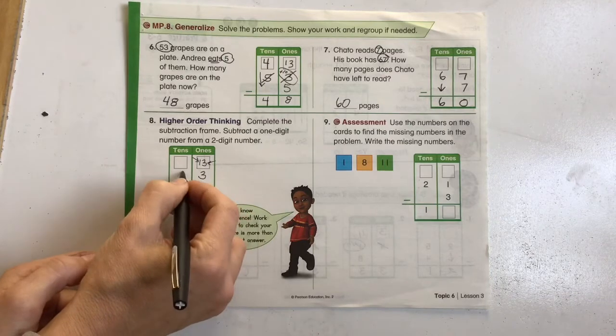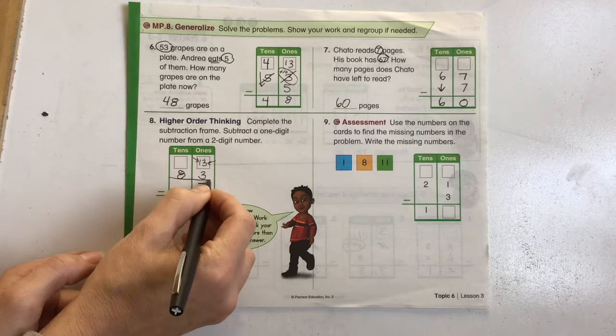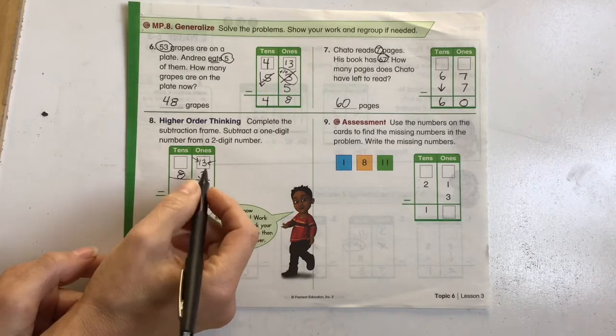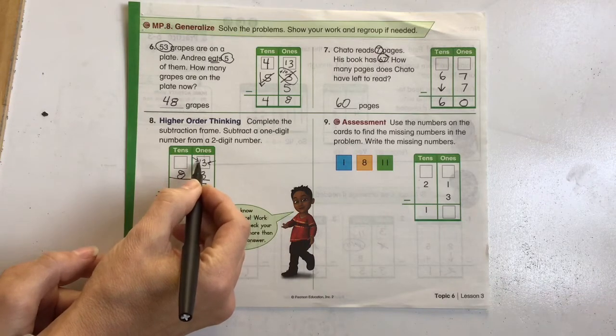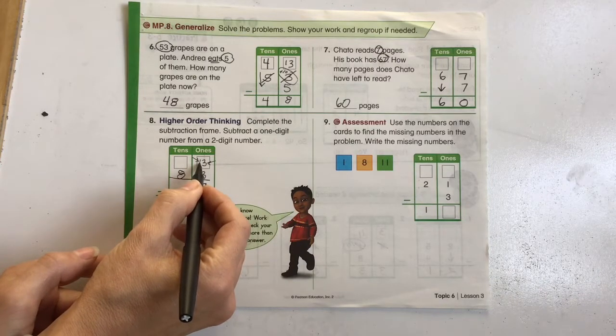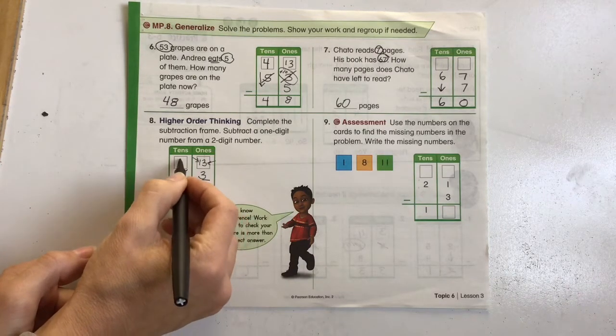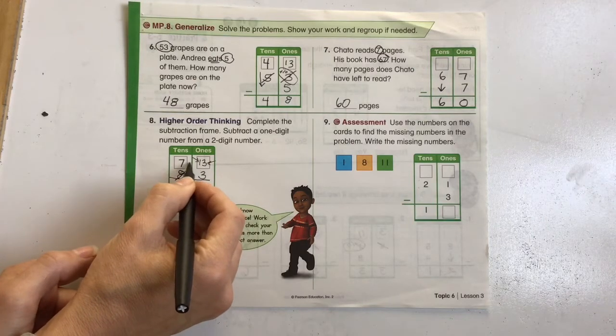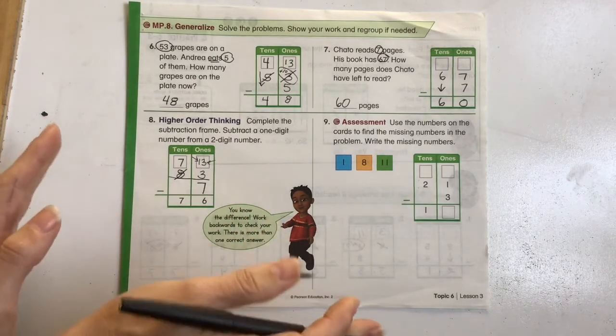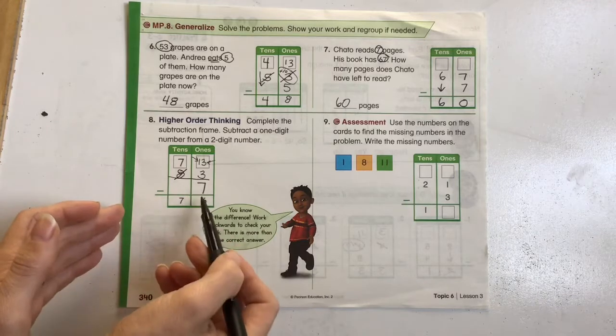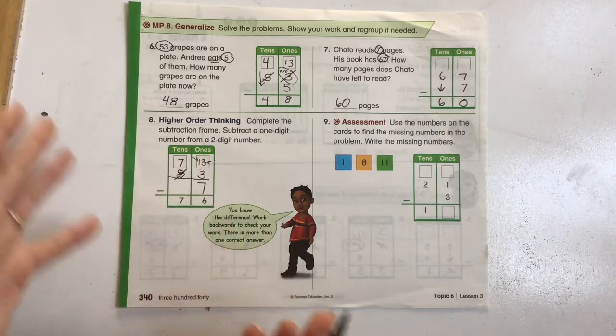So we'll say it's 83 minus 7. If I had to regroup and take a group of 10 from over here, that 8 is now going to become a 7 because we added the 10s over. So again, it's just higher order of thinking, getting the students to take a look at different numbers.